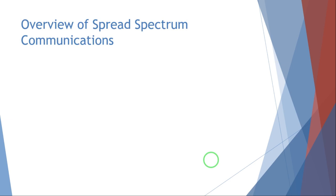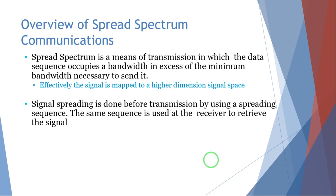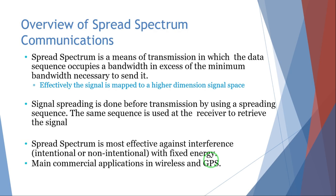The overview of spread spectrum communication: it is a means of transmission in which the data sequence occupies a bandwidth in excess of the minimum bandwidth necessary to send it. This means the signal is effectively mapped to a higher dimensional signal space. Signal spreading is done before transmission using a spreading sequence, and the same sequence is used at the receiver to retrieve the signal. Spread spectrum is most effective against interference, whether intentional or unintentional, with fixed energy.